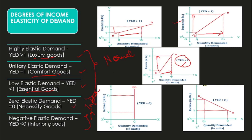The fourth case is zero elastic demand — even if income increases, you are not going to increase the quantity demanded even a little bit. These are necessity goods: very important but important to the extent that you simply cannot consume them much more. For example, salt — a very basic kind of thing.